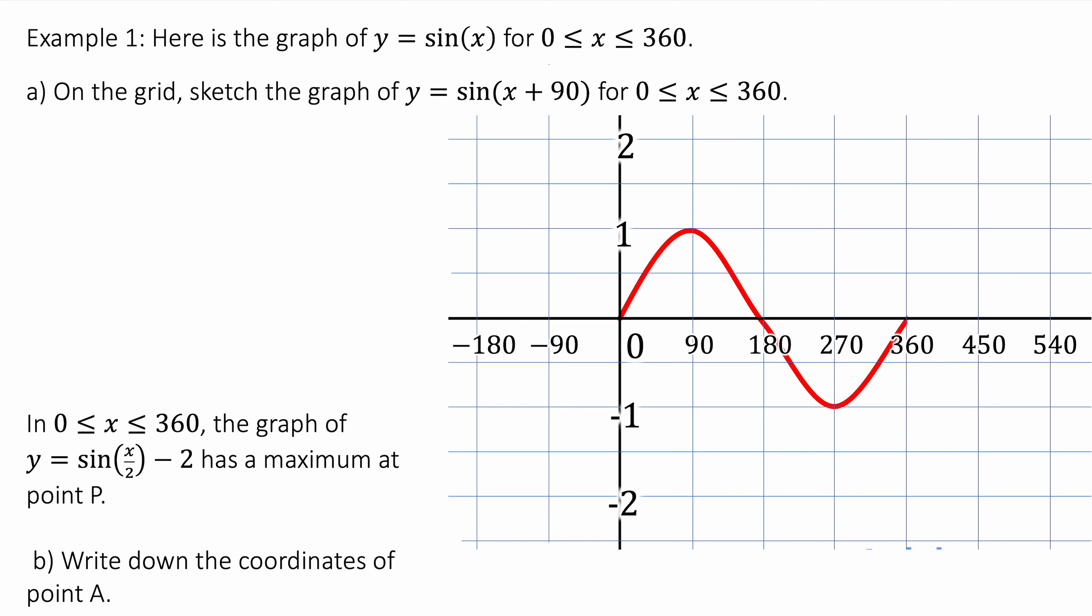Now let's see this in action. So we've got an exam style question here. It says we've got the graph of y equals sin of x between 0 and 360 degrees. On the grid sketch the graph of y equals sin of x plus 90 between 0 and 360.